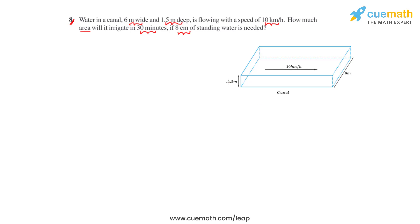We'll look at the canal which is in the shape of a cuboid, which is 1.5 meters deep and 6 meters in width. The water in it is flowing with the speed of 10 kilometers per hour. To know how much volume of water will flow through it in a minute, we'll have to find out the area of the cross section.